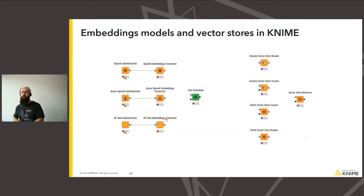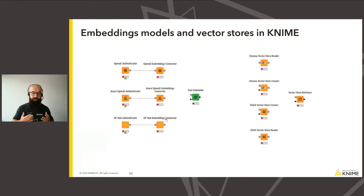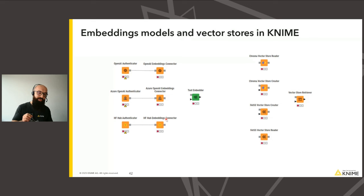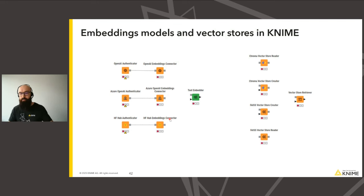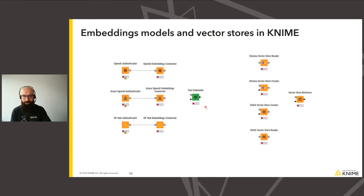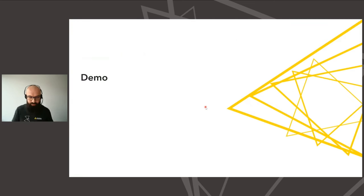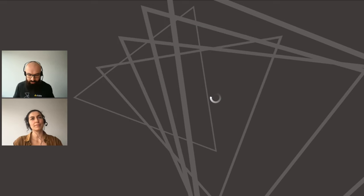To do this in KNIME, we have the corresponding nodes. For embeddings models, we have models from OpenAI and Azure OpenAI, and also connectors for embeddings models on HuggingFace Hub. In December, we will also have an embeddings model from GPT4All that runs locally on your machine. For vector stores, we currently support Chroma and FAISS vector stores, and we have the vector store retriever node which does the semantic search. We also have the text embedder if you want to get those embedding vectors, which can be used for clustering or visualization. With that, I'll hand over to Sarai to see how to implement retrieval augmented generation in the KNIME Analytics Platform.